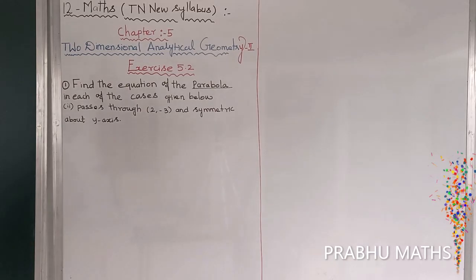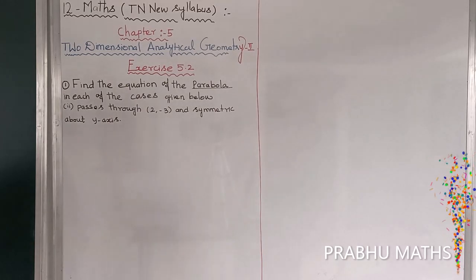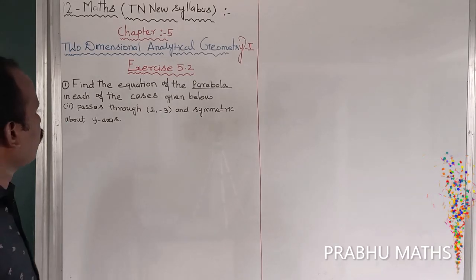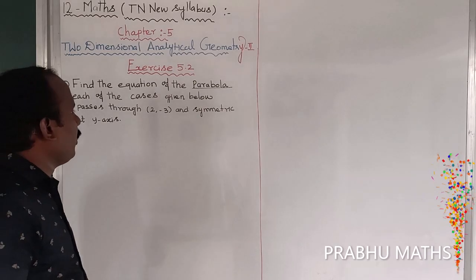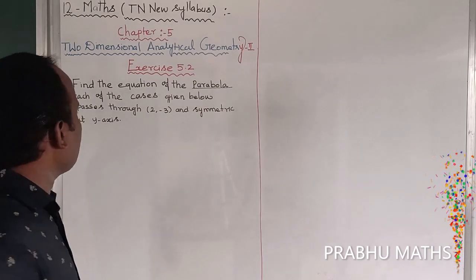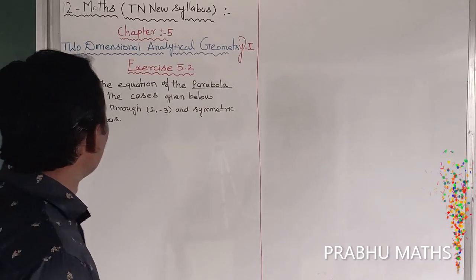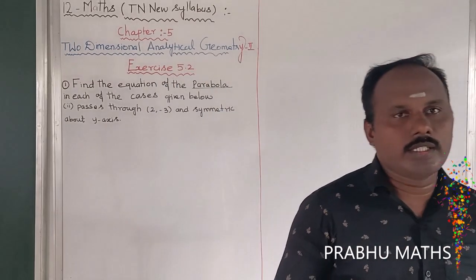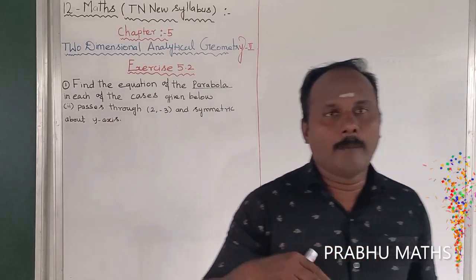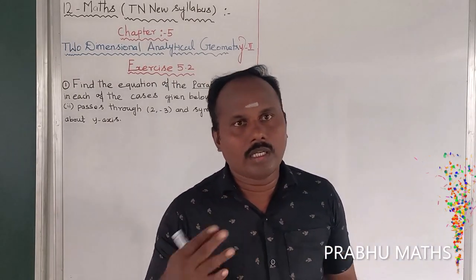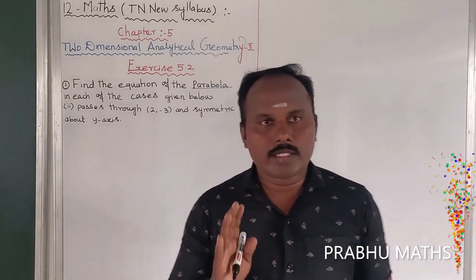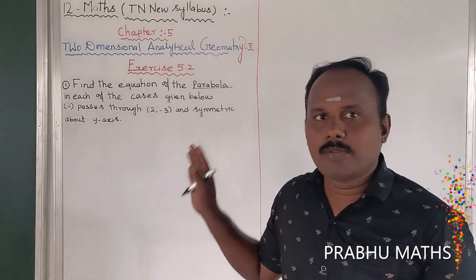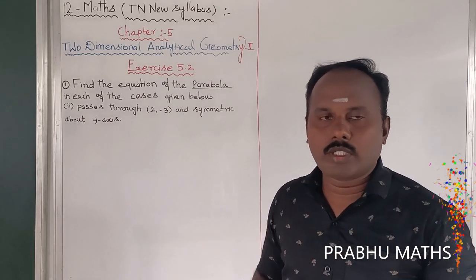X is 5.2, first sum, second subdivision: passing through point (2, -3) and symmetric above the y-axis. So symmetric above the y-axis — that is called upward open or downward open. That is called the general form of a parabola, upward or downward open.